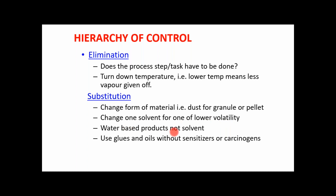More volatile components can be substituted by less volatile ones. Water-based products should be used instead of solvent-based products, because solvents involve more volatile components that evaporate in the working environment and affect health. Glues and oils without sensitizers or carcinogens should be used; substances that can cause cancer can be substituted by non-carcinogenic substances. These are examples of substitution.